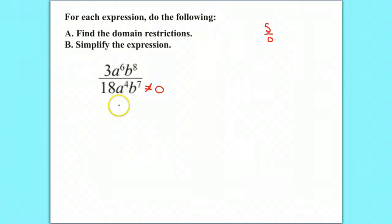So the two ways you're going to get zero here is if A equals zero or if B equals zero. Because if either one of those variables are zero, you're going to get 18 times zero to the fourth times B to the seventh. Well, zero times anything is zero, and zero times 18 or B to the seventh is still zero. Zero times anything is zero, and so that is going to be a zero in our denominator.